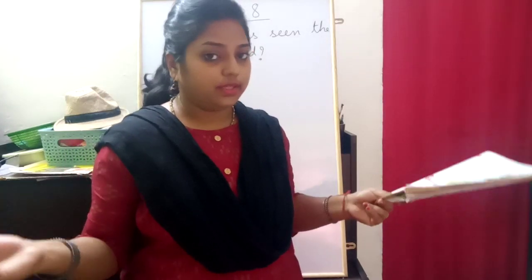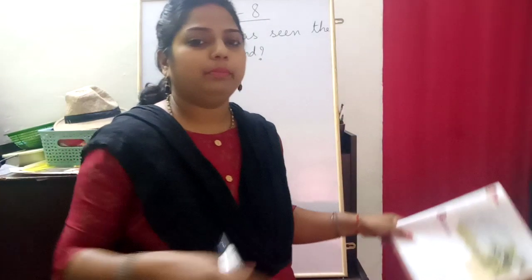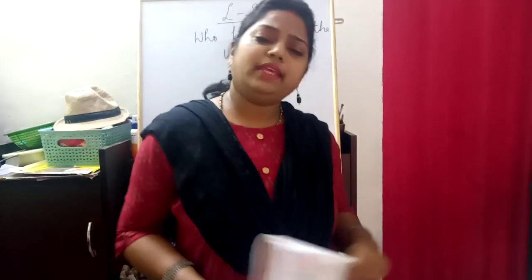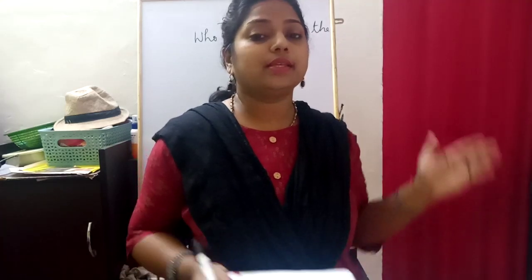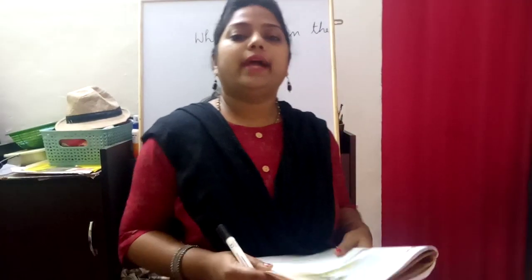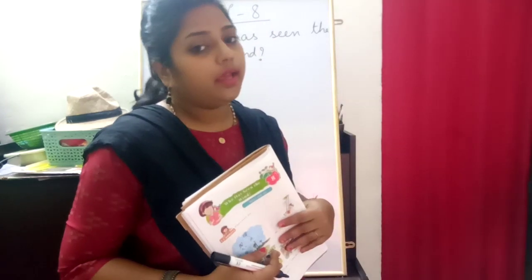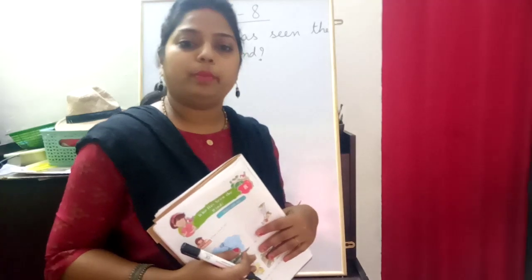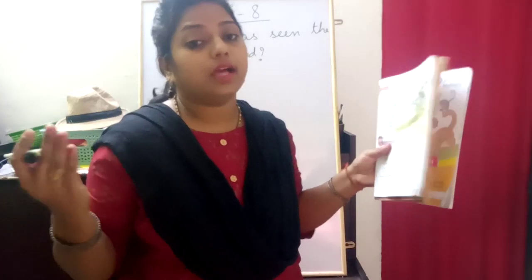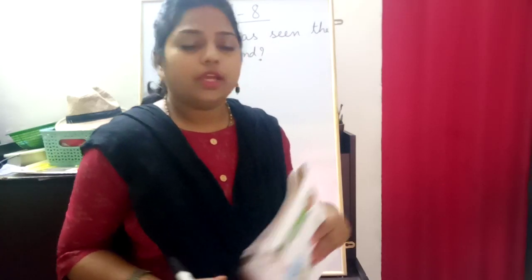The second stanza: 'Who has seen the wind? Neither you nor I. But when the trees bow down their heads, the wind is passing by.' Again the poet explains that the wind cannot be seen by us until we see the trees. When a huge wind blows, when the storm comes, the trees bow down their heads. This shows that the wind can be felt only by the presence of other objects when it affects them — it cannot be seen by itself, alone.